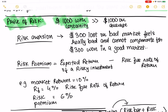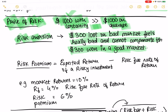$1,000 today with certainty is greater than $1,000 on average from a risky investment. The difference is risk. There is also a psychological aspect of risk aversion — losing $300 in a bad market feels really bad, and gaining that same $300 back in a good market doesn't fully compensate. Losing $300 feels much worse than gaining $300, even when you're net zero.